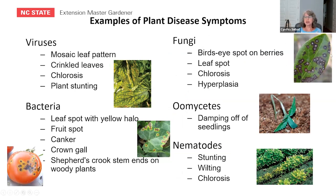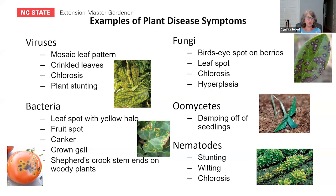You might have fungi that give you a very specific type of leaf spot on a particular plant, and you'll know immediately what's causing your problem. Viruses very often have a mosaic pattern with yellowing called chlorosis, and can cause crinkled leaves and stunting. Nematodes have similar symptoms, but in the field it's characteristic enough to recognize. You can have leaf spots, galls, cankers, and hyperplasia — an overgrowth of tissue. The plant has limited ways it can respond, but these symptoms can be characteristic and key you into identifying the problem.